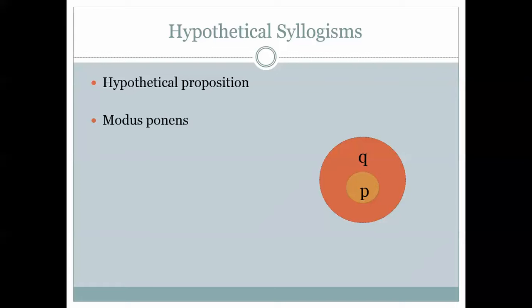The first connective we're going to talk about is the hypothetical — if-then statements. When you see P-arrow-Q, we define that as meaning 'if P then Q,' where P and Q are propositions. For example: 'If you go to school, then you will drink from the fountain of knowledge.' Those are two propositions connected by if-then.